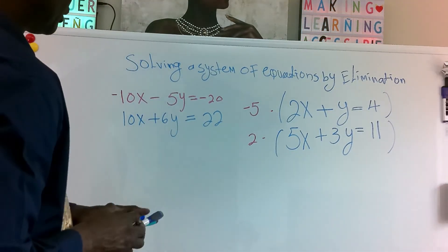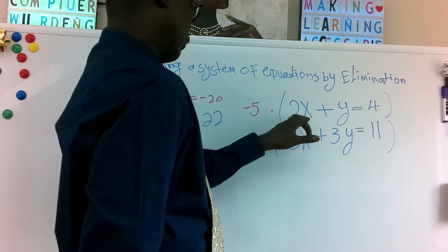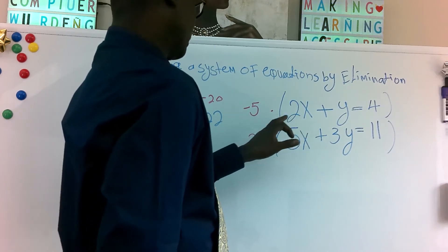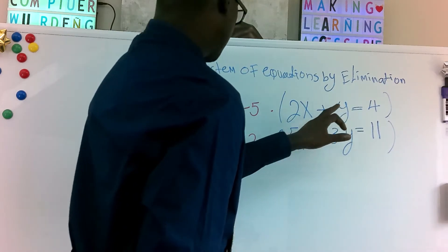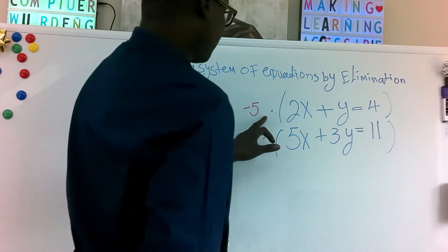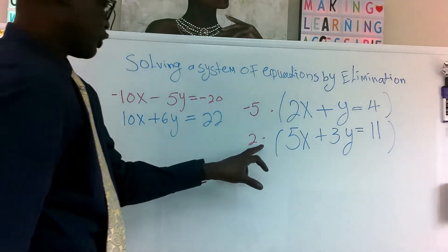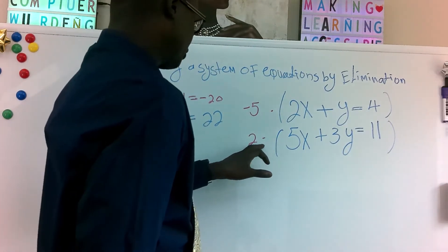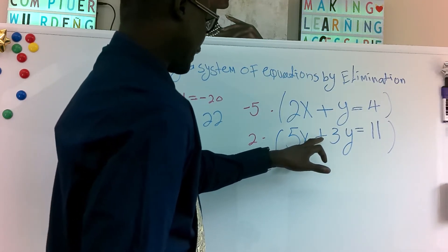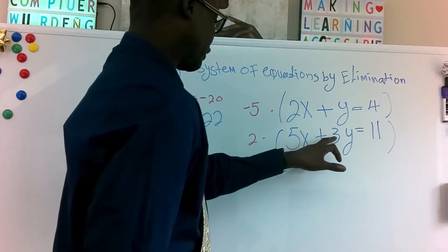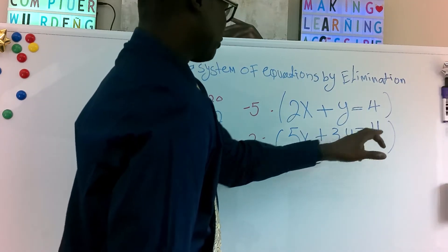Let's verify: minus 5 times 2x is minus 10x; minus 5 times y is minus 5y; minus 5 times 4 is minus 20. For the second equation: 2 times 5x is 10x; 2 times 3y is 6y; 2 times 11 is 22.